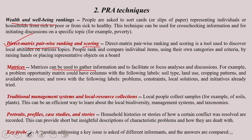Ranking methods include direct matrix, pairwise ranking, and scoring methodology. Matrices can be used to gather information or facilitate analysis and discussion. For example, a problem-opportunity matrix could have columns with aspects like soil type, land use, cropping patterns, and available resources, while rows contain problems, constraints, local solutions, and initiatives already tried. This helps lead to a ranking of different problems and corresponding solutions.